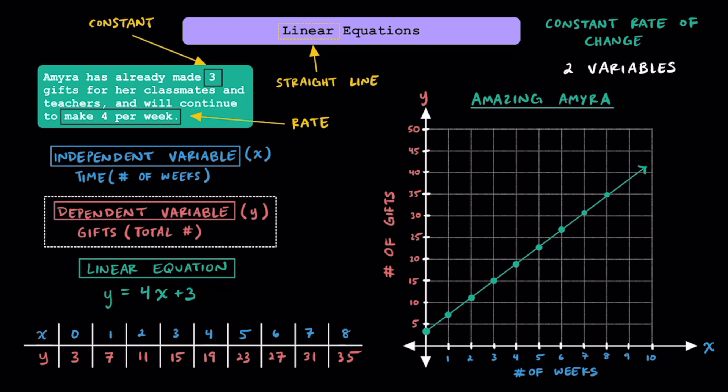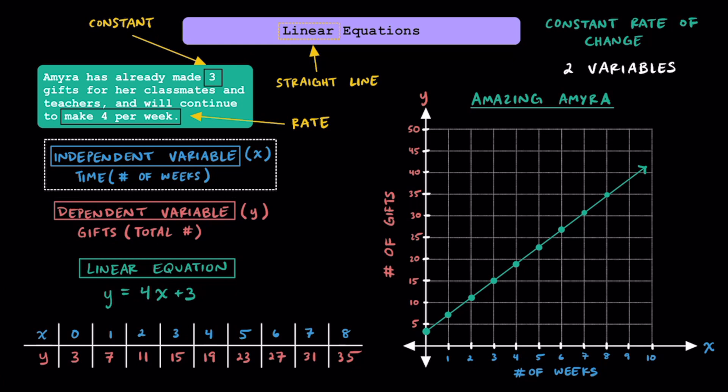As for the dependent variable, we typically use the variable y to represent this, and in this scenario, the total number of gifts that Amira makes is going to be the dependent variable. It's important to note that the dependent variable is always going to depend on the independent variable. The only way that Amira is going to be able to make more gifts is if more time goes by.